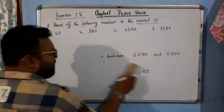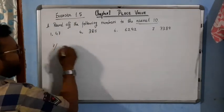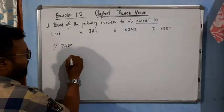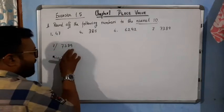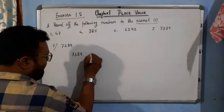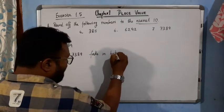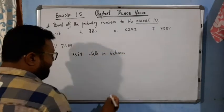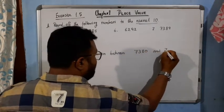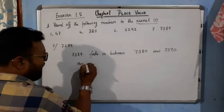Now come to the last one: number 7. The number is 7389. Here also, because we are talking about nearest ten, we will only see the last two digits. 7389 falls in between 7380 and 7390. For the nearest ten, we will check: 9 is greater than 5.